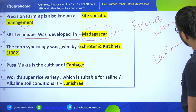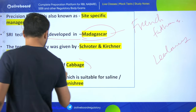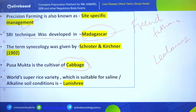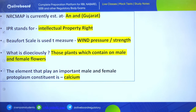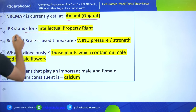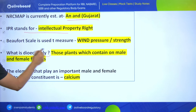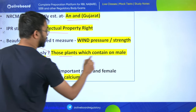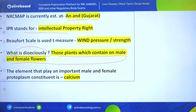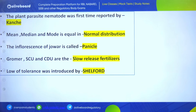Pusa Mukta is a cultivar of cabbage. The world's super rice variety suitable for saline and alkaline soil is known as Lunishree. NRC MAP is currently established at Anand, Gujarat. IPR stands for Intellectual Property Rights. Dioecious plants contain only one male and one female flower. The element important in male and female protoplasm is calcium. Plant parasite Neotoria was first reported by Kunkel.